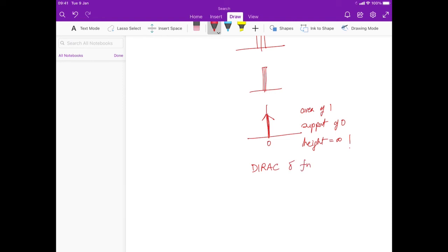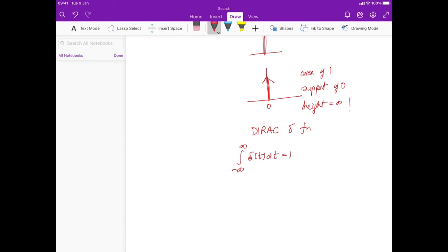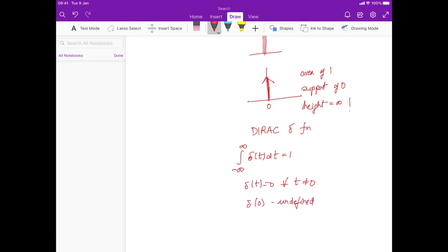More precisely, we define it like this: the integral from minus infinity to infinity of delta t dt equals 1. What we're saying is that the mass, the area under the curve of delta t, is 1, and delta t equals 0 for all t not equal to 0, and delta t at 0 is undefined. I'm not going to go through a more formal definition because this is mathematically somewhat complicated, but we'll define it this way and this is the Dirac delta function.